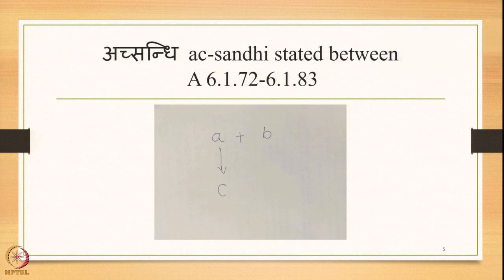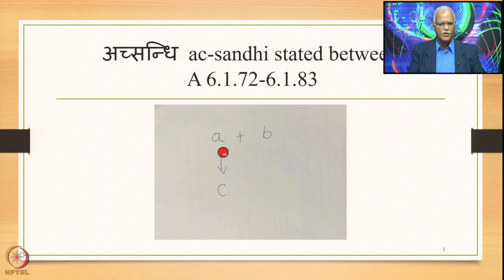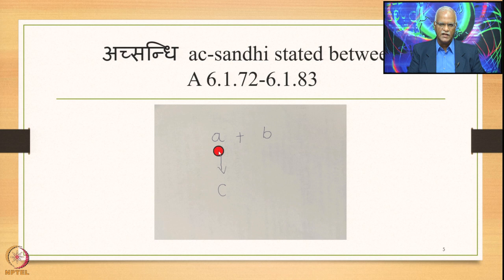The Ekasthanika Ekadesha, as we saw earlier, can be diagrammatically represented as shown on the slide. It is stated in the Ashtadhyaya in the section from 6.1.72 onwards up to 6.1.83. Diagrammatically, A is followed immediately by B in close proximity in Samhita mode, then A is substituted by C. A is the Sthani, C is the Adesha, and B is the Nimitta.